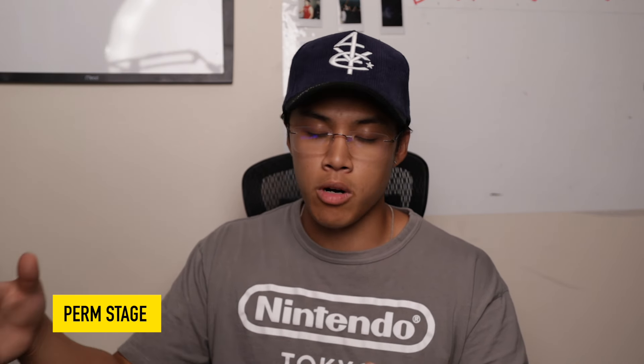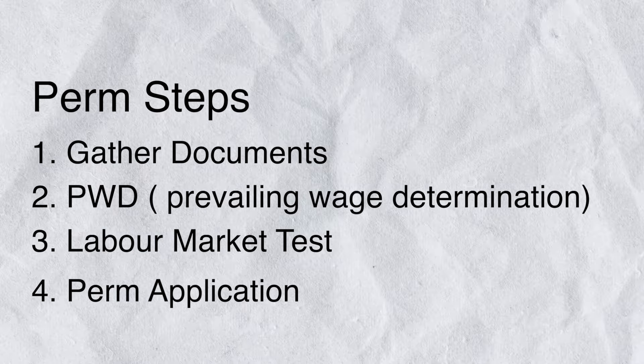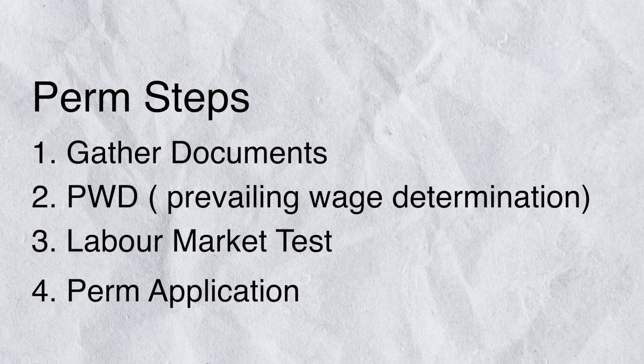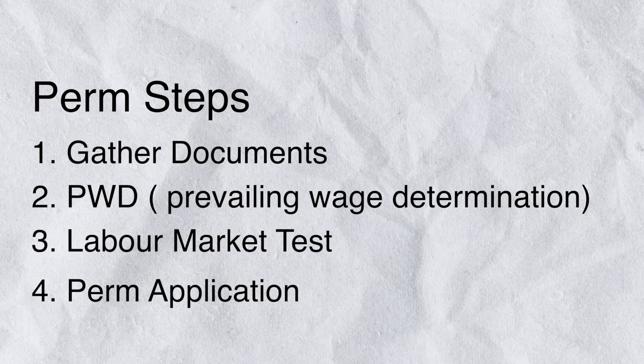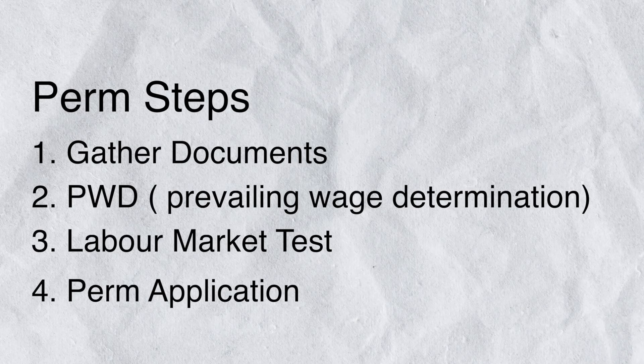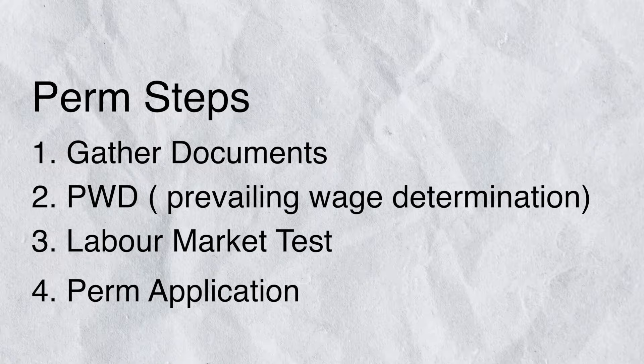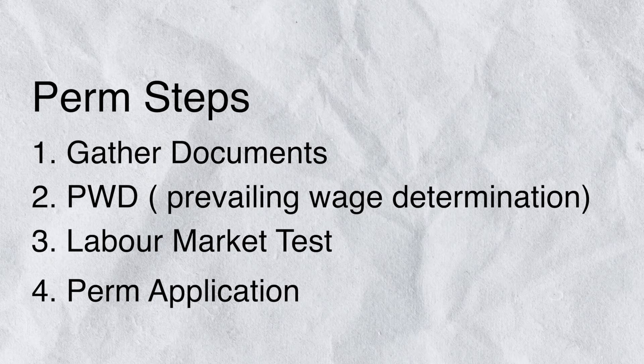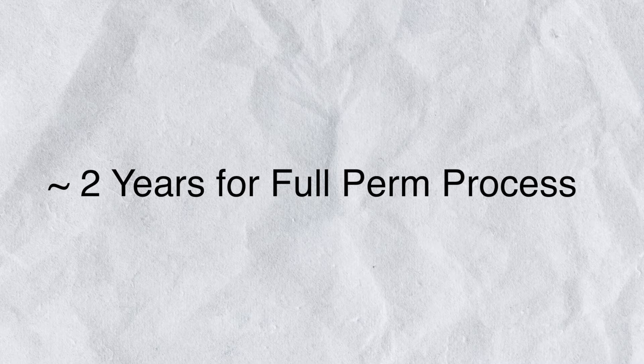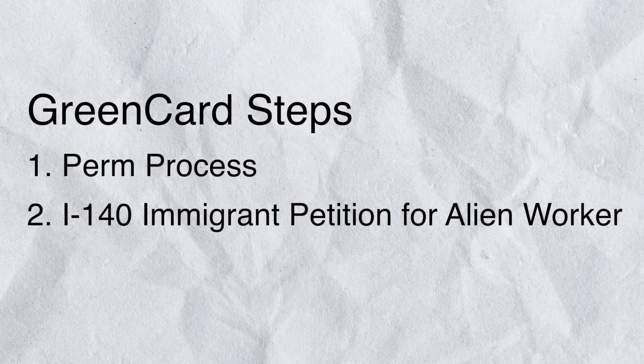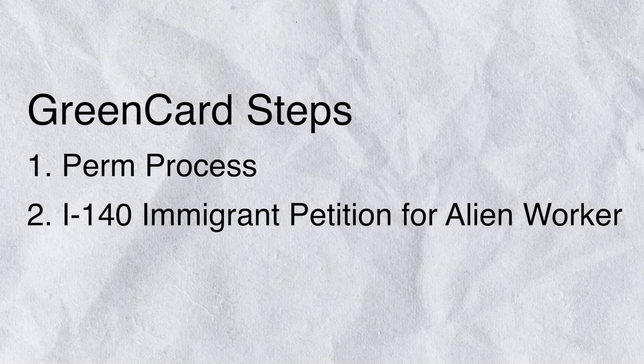To quickly summarize the first stage: the PERM process has four stages — gathering your documents, the prevailing wage determination, doing a labor market test, and filing for the actual PERM itself. In terms of time estimates, I'd say somewhere around two years plus or minus a couple of months. This process for the TN visa and the H-1B visa is more or less the same from my understanding. Next, we'll move on to the second stage of the green card process, which is filing the I-140.